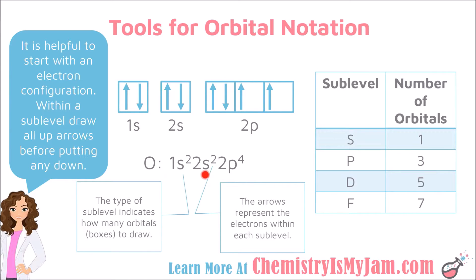Then I go to the next part and I see a 2s sublevel. The fact that it is an s means it should only have one box, and there should be two electrons in it — one going up and one going down. The 2p sublevel comes next. P has three orbitals, so I would have three boxes, labeled 2p, and I need four electrons in that sublevel. I always draw my up arrows first: up, up, up. At that point I've maxed out my up arrows, so now I can go back and put a down arrow. I have obeyed Hund's Rule, the Aufbau Principle, and the Pauli Exclusion Principle by doing things in that order.